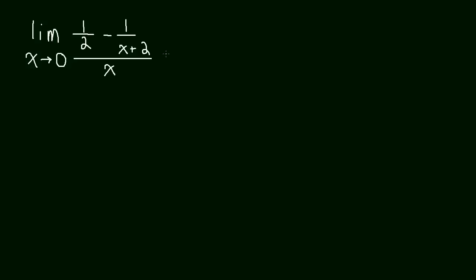It shouldn't take long to realize that if you plug 0 in, this will end up being 0 over 0. Because if we plug 0 into this, we're just going to get 1 half minus 1 half, that's 0. And then into the denominator you just have x, so that's 0.